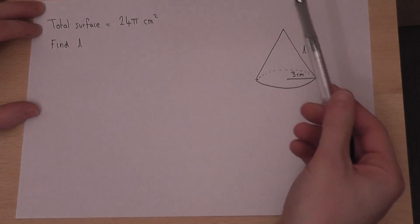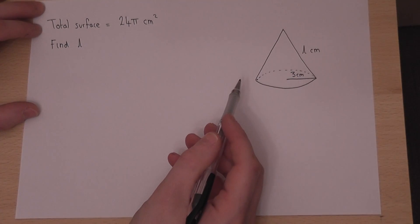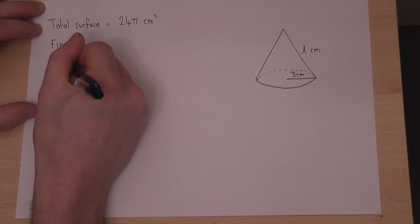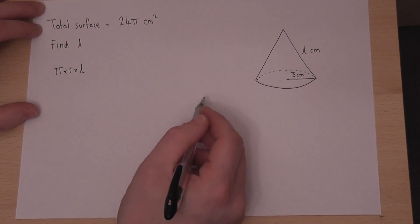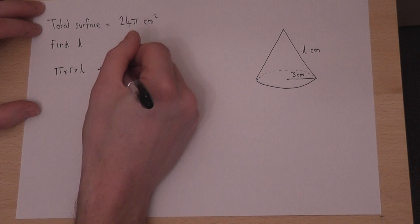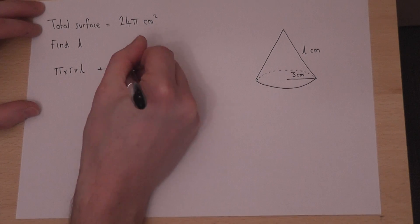We have the curved part, which forms the cone, and that's given by π times R times L. And that's given in the front of the GCSE examination. But it's also the area of the circle, which is π times R squared.